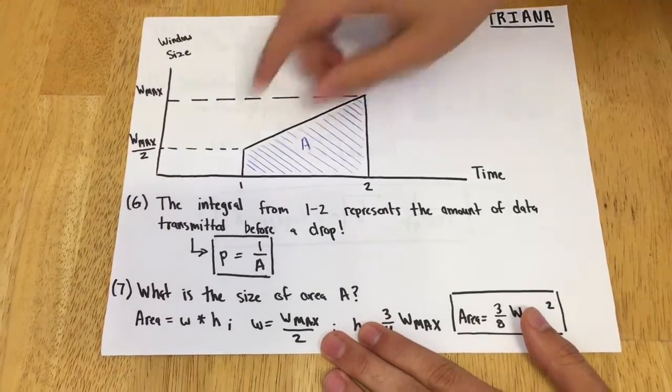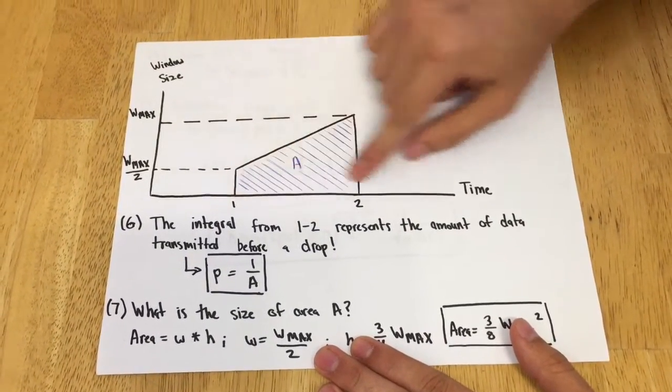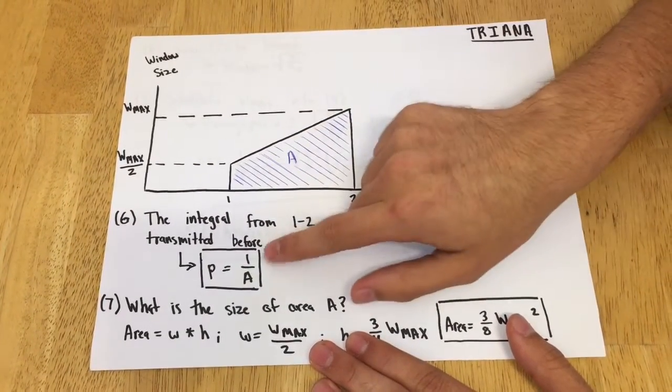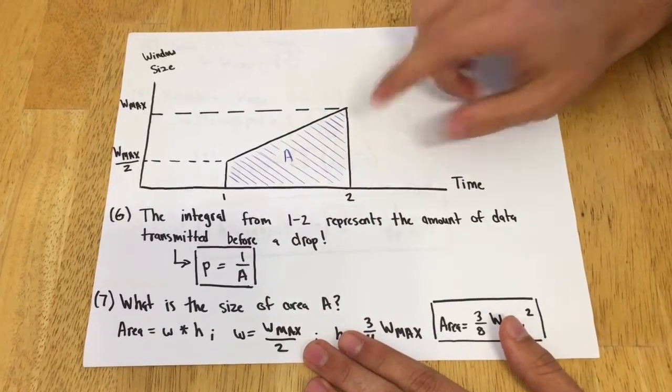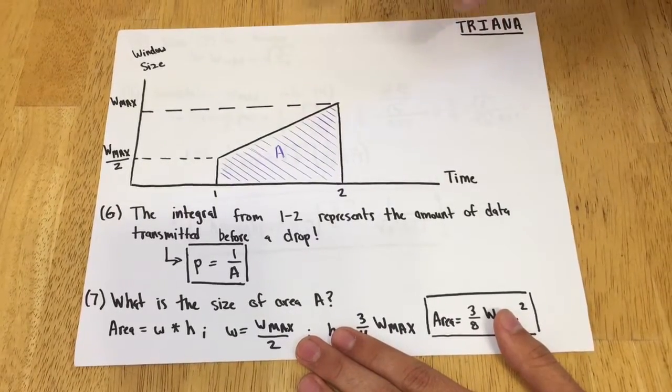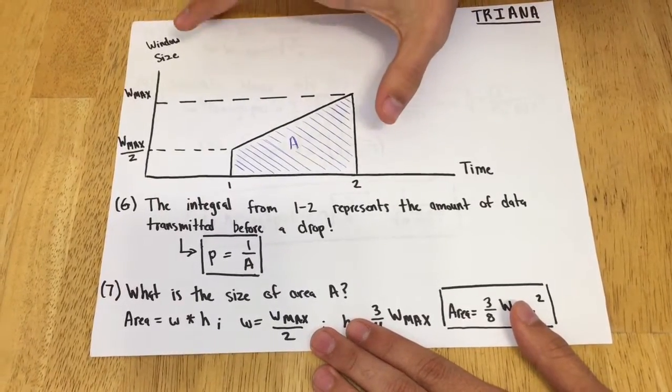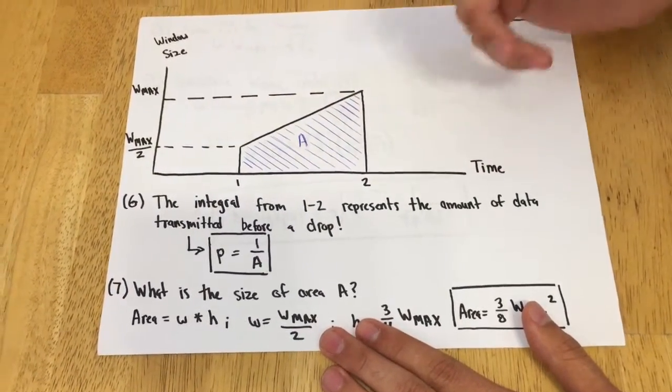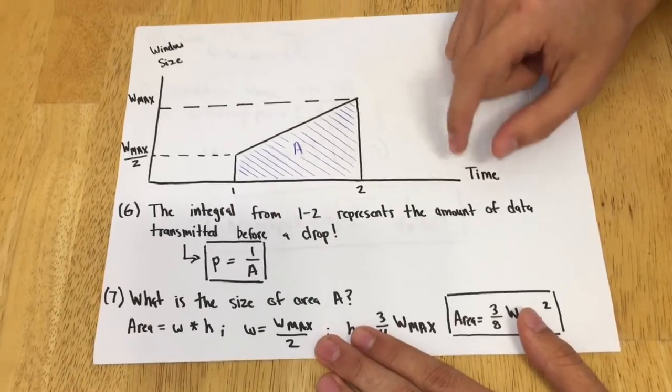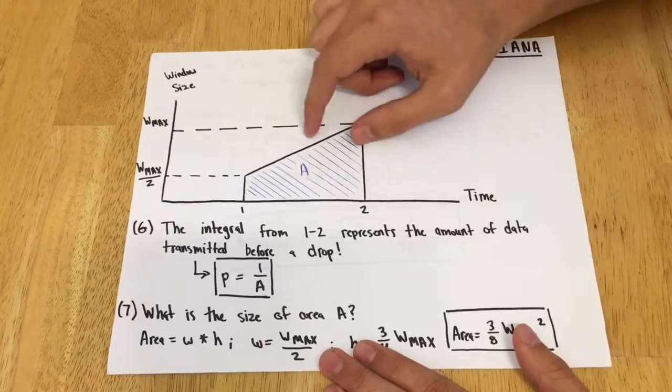It turns out that D, the amount of data sent before drop, is actually just expressed as this integral here, which is this shaded region. So we can express the probability of a drop in this graph as 1 over A, where A is this integral. For our x-axis, we're going to use units of RTT—that means the integral will be units of RTT times bytes, so our total integral will be in bytes.